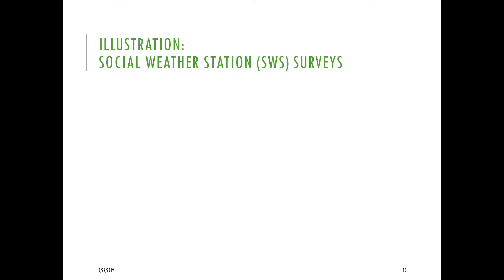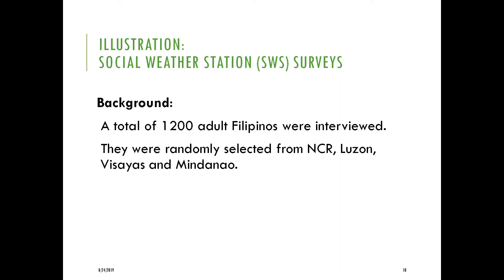Let's have an example — let's take a Social Weather Station survey. You are familiar with the SWS surveys that are often mentioned during newscasts. In an SWS survey, a total of 1,200 adult Filipinos were randomly selected from NCR, or the National Capital Region, then from Luzon, Visayas, and Mindanao.